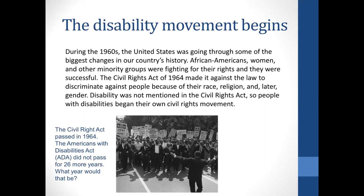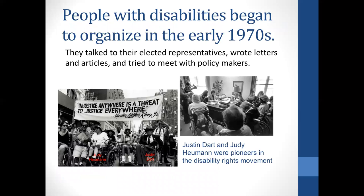So people with disabilities begin their own civil rights movement, in large part similar to the Civil Rights Movement. The Civil Rights Act was passed in 1964, but the ADA, or the Americans with Disabilities Act, was not passed for 26 more years. That's really a long time — so what year did the ADA pass? People with disabilities began to organize in the early 70s.